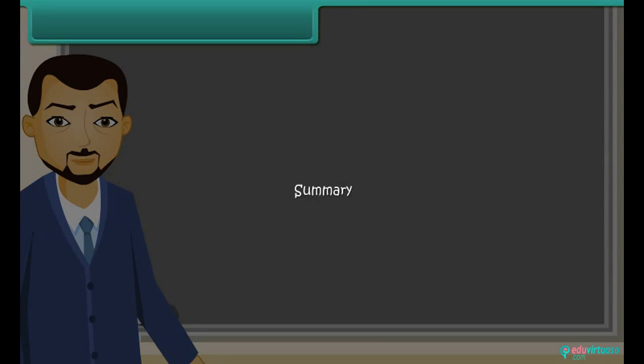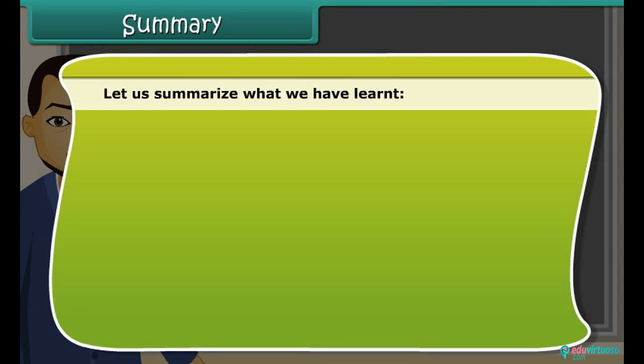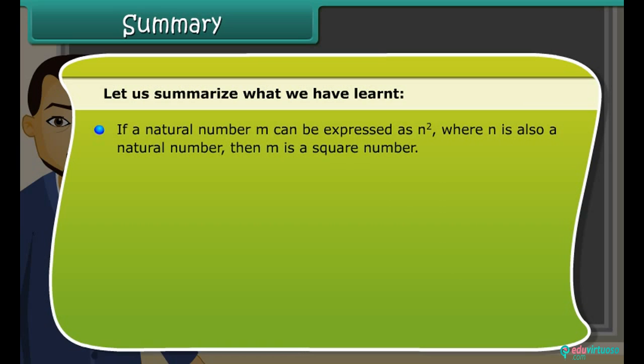Summary: Let us summarize what we have learned. If a natural number M can be expressed as N square, where N is also a natural number, then M is a square number. The perfect squares are the squares of the whole numbers. Square of a negative number is a positive number.